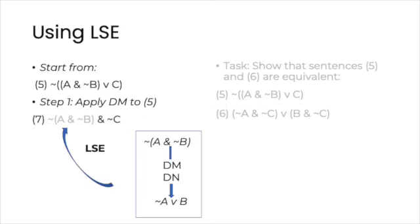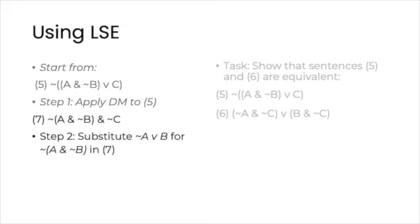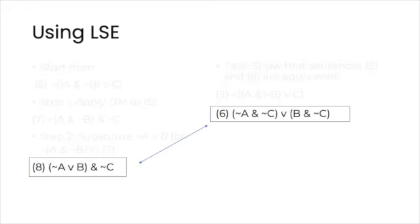Thanks to LSE, we also know that we can exchange, while preserving the truth, parts of sentences for their truth functional equivalence. Thus, we substitute NOT A or B for NOT, parenthesis A, and NOT B, plus parenthesis in 7. And that is our second big step. So it is substitute equivalence for equivalence and apply LSE to get 8. But 8 is still different from 6, so we haven't yet reached the second formula in the equivalence we want to establish. So which rule should we use?